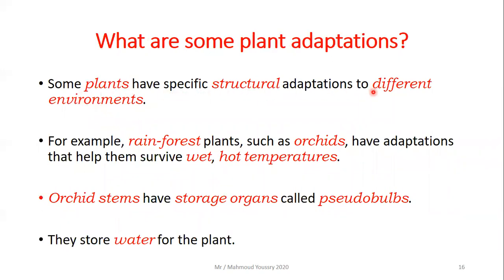Some plants have specific structural adaptations to different environments. Rainforest plants such as orchids have adaptations that help them survive wet, hot temperatures. The orchid's stems have storage organs called pseudobulbs - the P is silent. Pseudo means fake or not real. These pseudobulbs are like a swelling that stores water for the plant.